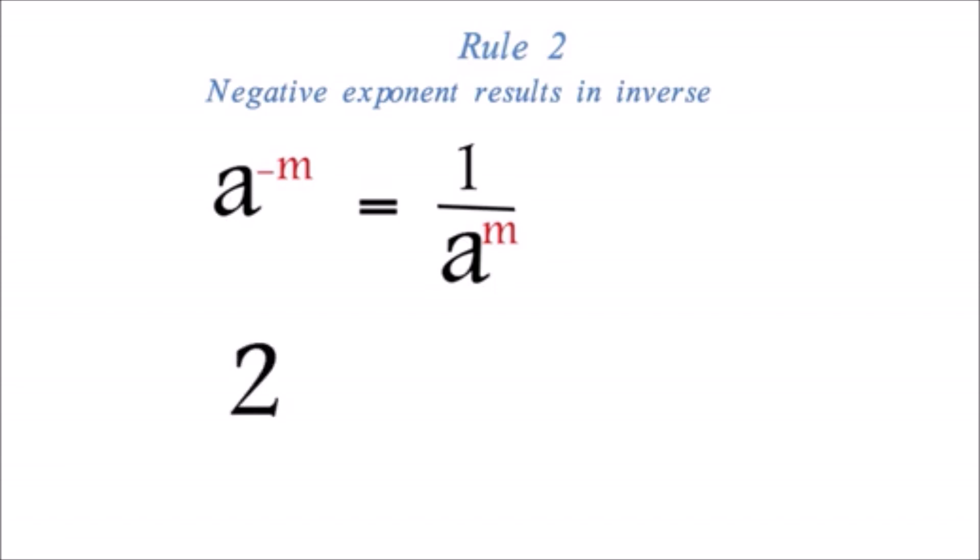Rule 2: The next important rule is on negative exponents. Negative exponent results in inverse. Therefore, a exponent negative m equals 1 over a exponent m. Example: 2 exponent negative 3 is equal to 1 over 2 exponent 3, which is equal to 1 over 8.